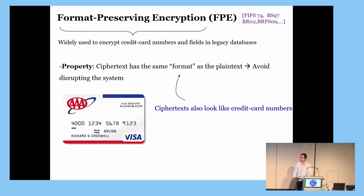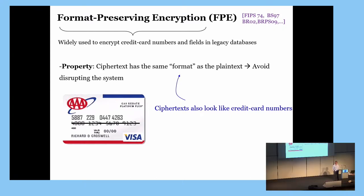In contrast, under FPE, ciphertext will always have the same format as the plaintext. For example, if you encrypt a credit card number, then the ciphertext will also look like a credit card number. Therefore, using FPE would avoid disrupting the system.